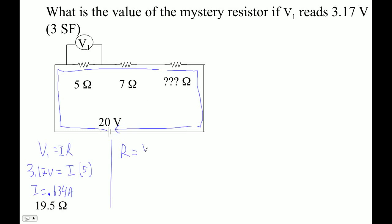R is V over I, right? So the total resistance is the total voltage, 20 volts divided by 0.634. So 20 divided by the answer I just got is 31.5457.